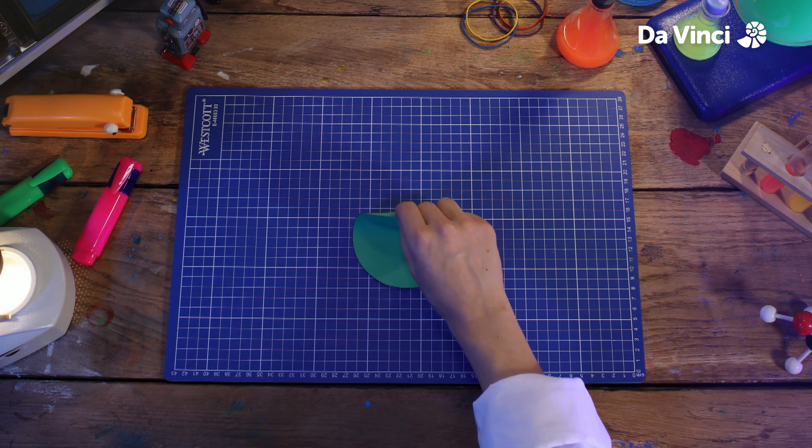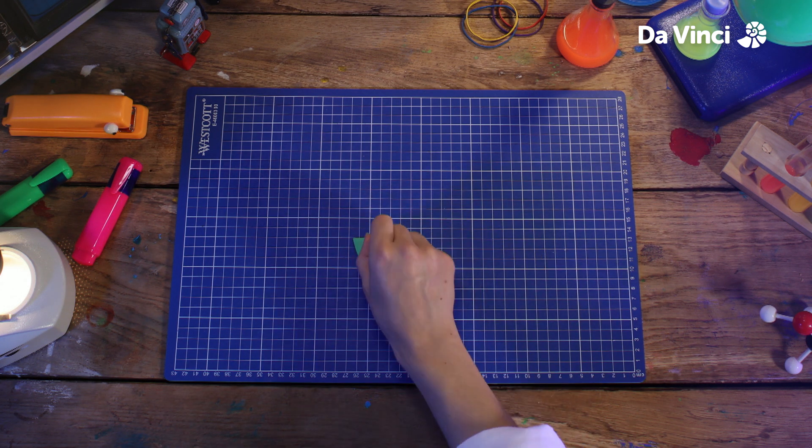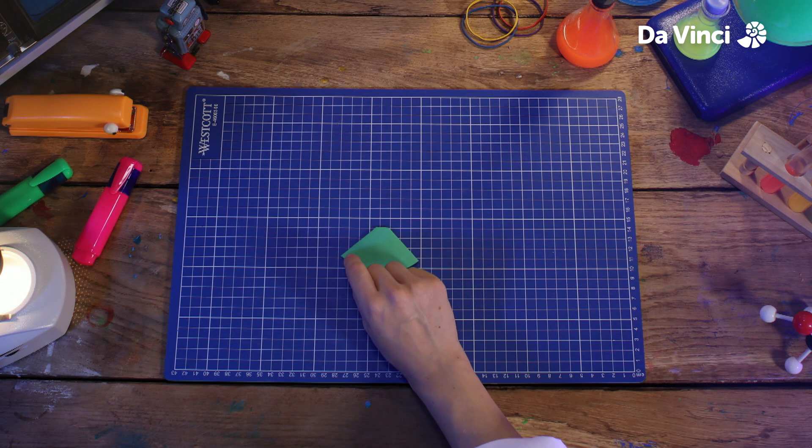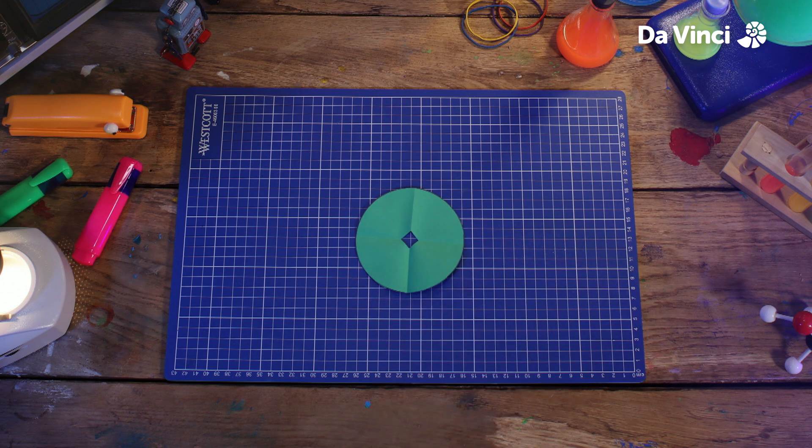Now I'm going to fold it in half, and then in half again into quarters, and cut the corner off. Now when I unfold it, we've got a square hole in the middle.